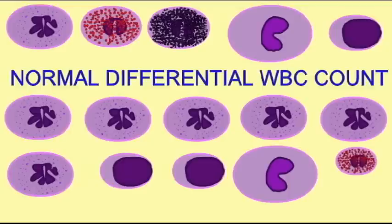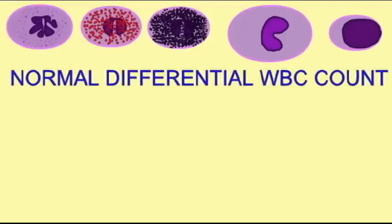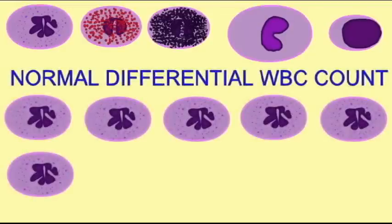Lymphocytes are the second most common white blood cell, composing 20 to 30 percent of circulating white blood cells. Their numbers can be elevated in viral infections, immune disorders, and some leukemias.